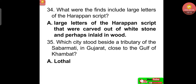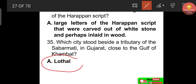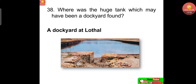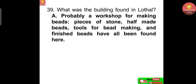Lothal stood beside a tributary of the Sabarmati in Gujarat, close to the Gulf of Khambhat. It was an important center for making objects out of stone, shell and metal. There was also a storehouse in the city, and many seals and sealings — impressions of seals on clay — were found there. A huge tank found at Lothal may have been a dockyard. A building found at Lothal was probably a workshop for making beads; pieces of stone, half-made beads, tools for bead-making and finished beads have all been found there.